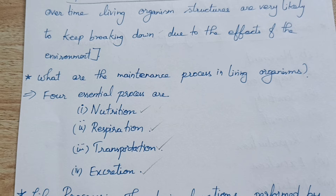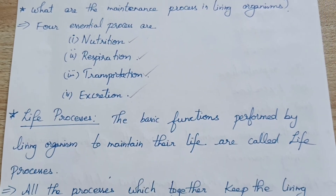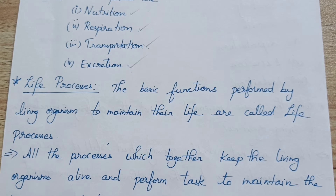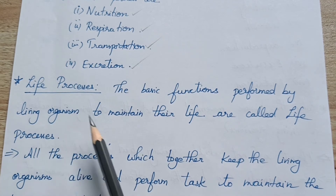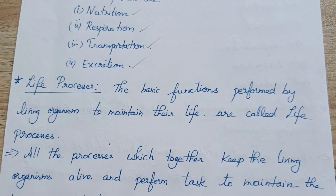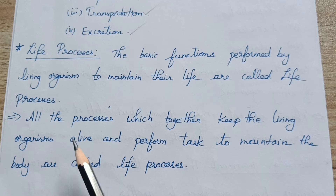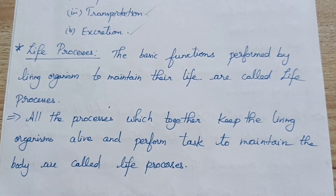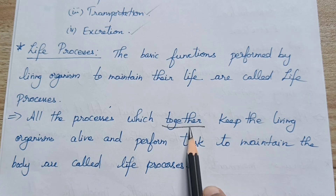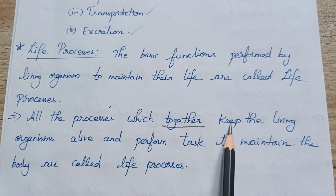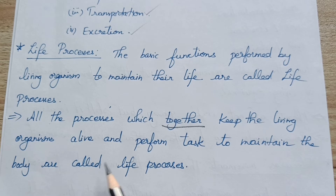So our lesson name is life processes. What is meant by life processes? It is repair and maintenance of the structure. All these four processes are performed together to maintain the body alive — this is called life processes. The basic functions performed by a living organism to maintain their life are called life processes. All the processes which together keep the living organism alive and perform tasks to maintain the body are called life processes. If any one process stops, then you will not be alive.